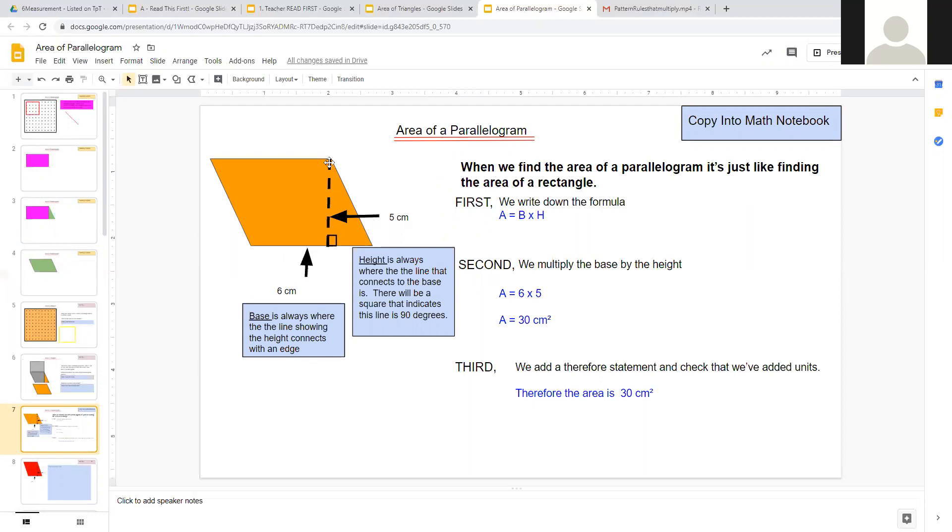The only difference is our shape looks different, so we have to watch for this line. This line tells us that this is the height, and where the square is, that's the base. Our base is always where that line is connecting to an edge, and then our height is always that dotted line there. We can rotate our parallelogram any which way, but it doesn't matter—we're always going to use that same thing.